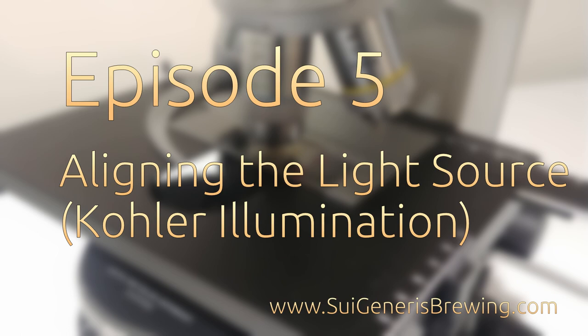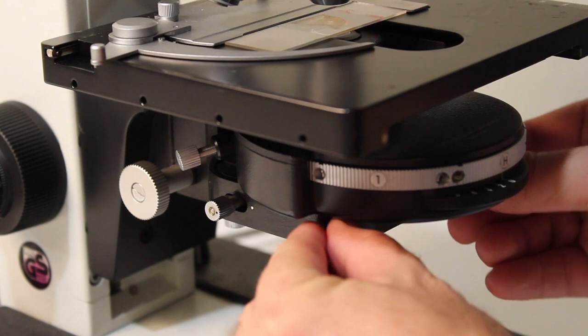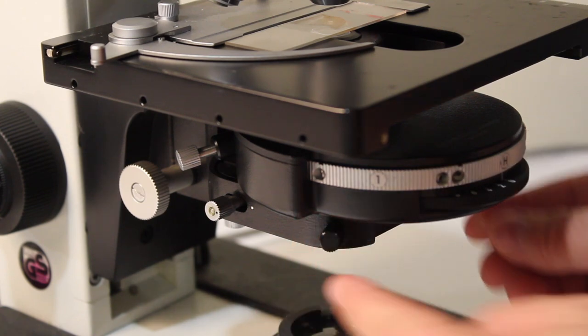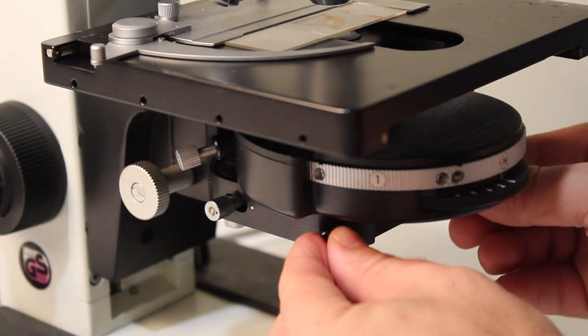Welcome to Episode 5 of Microbrews, my new video series on how to make the best use of a microscope in your home or craft brewery. In this episode we will be demonstrating how to align the illumination optics of your microscope.